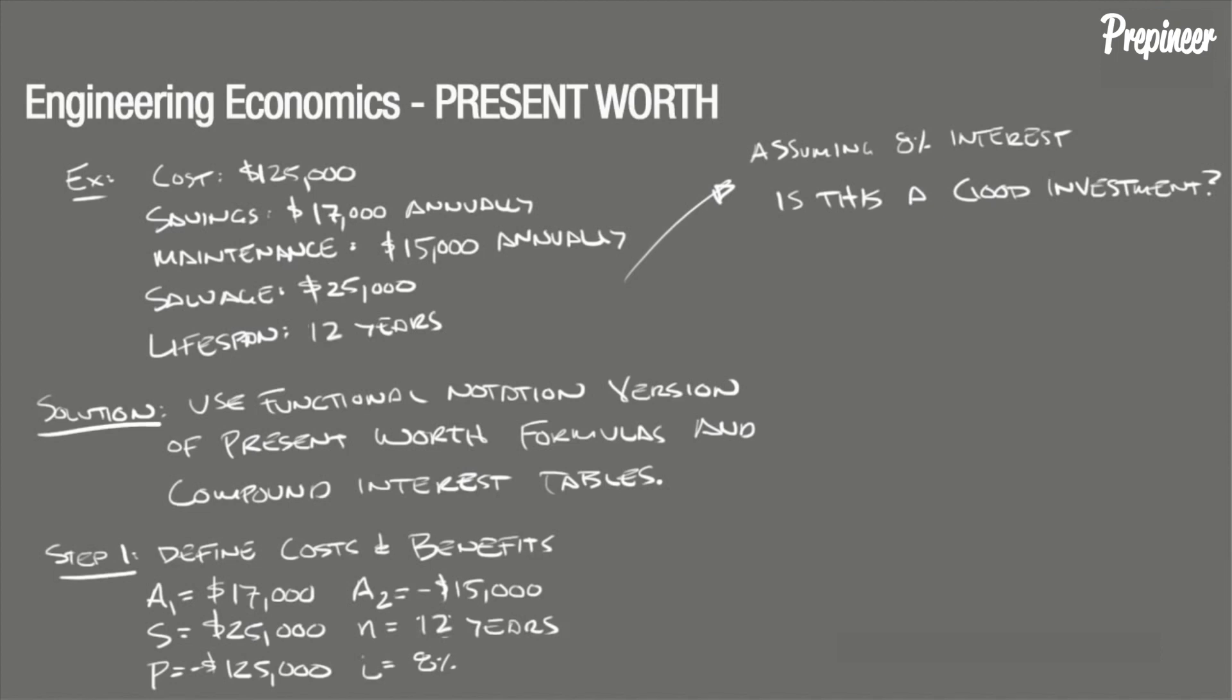We now need to determine which present worth formulas we need to solve this problem. We have three items that need to be converted to a present worth: one annual cost, one annual benefit, and a future cost. Therefore, referencing the table on page 114, we will use the uniform series present worth formula written in functional notation for present worth, which is P is equal to A times P over A IN.